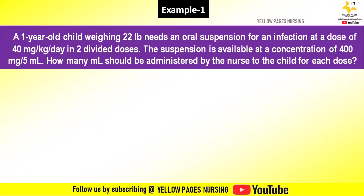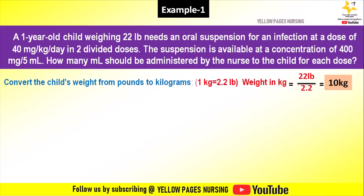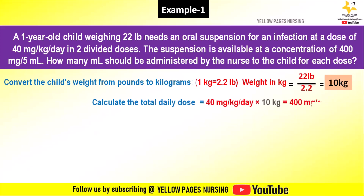As mentioned previously, we are converting the weight from pounds to kilogram first. 1 kg is equal to 2.2 lb, so weight in kilogram = 22 lb ÷ 2.2, which gives 10 kg. Now we calculate the total daily dose by multiplying 40 mg per kg per day by the weight of 10 kg.